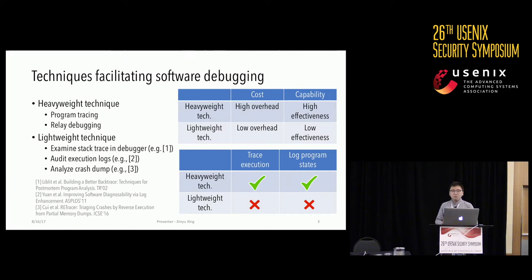Software developers usually spend 15% of their time finding bugs or fixing defects. To address this problem, a lot of work has been proposed to make software debugging easier and more efficient, including heavyweight solutions such as record and replay, and lightweight techniques such as examining stack trace in a debugger, auditing execution logs, and analyzing crash dumps.